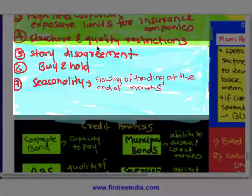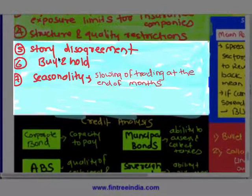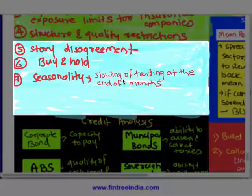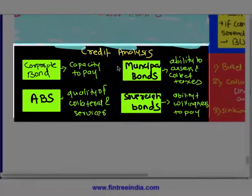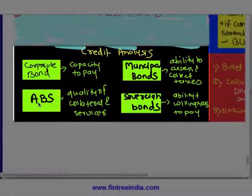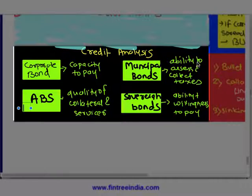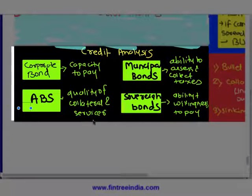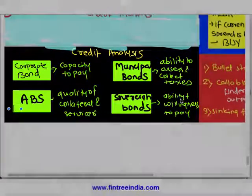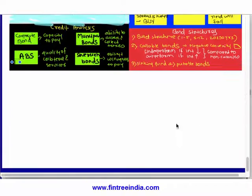Buy and hold, and seasonality — the slowing of trading at the end of the month. Then credit analysis: for four types of bonds — corporate bonds you look at capacity to pay; municipal bonds you look at ability to assess and collect taxes; asset-backed securities you look at quality of collateral and the servicer; and sovereign bonds you look at ability and willingness to pay.